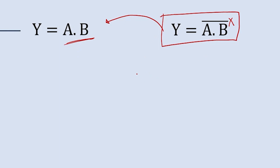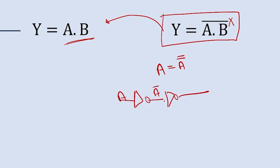To remove the bar we use a common phenomenon: A = Ā̄ (A double bar). If we pass A through one NOT gate we get Ā, and passing it through a second NOT gate gives us Ā̄, which equals A. So a double negation returns the original value.